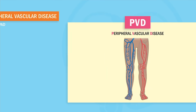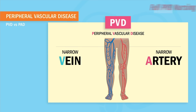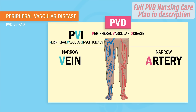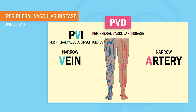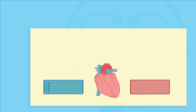So many students get confused with this, so please listen close. PVD stands for peripheral vascular disease, which affects both the blood vessels — veins and arteries. But PVD is also short for a very specific disease called peripheral venous disease, also called peripheral venous insufficiency, which is specific to the veins where blood can't get back up to the heart. PAD refers to the narrowed arteries, where oxygen can't get down to the distal extremities like the fingers and toes.